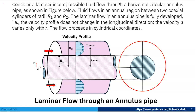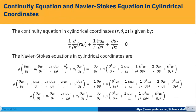There are two cylinders: one small and one large. The small cylinder is inside the large cylinder. From the center, the small cylinder has radius R1 and the large cylinder has radius R2. Now we have to set up the governing equation.